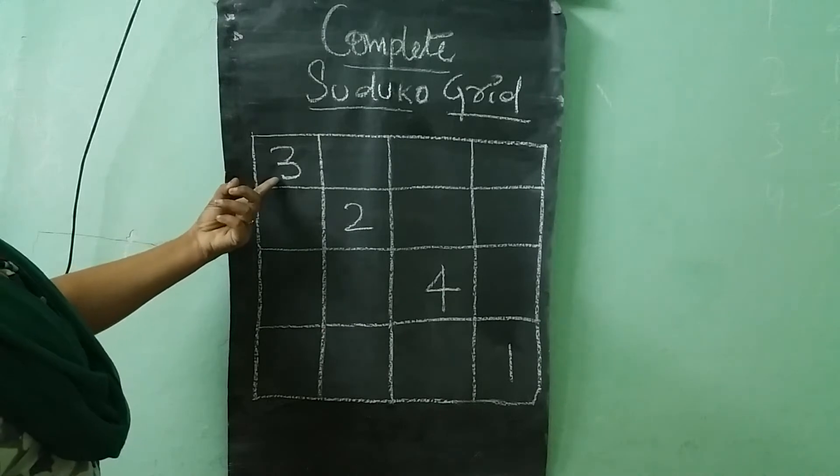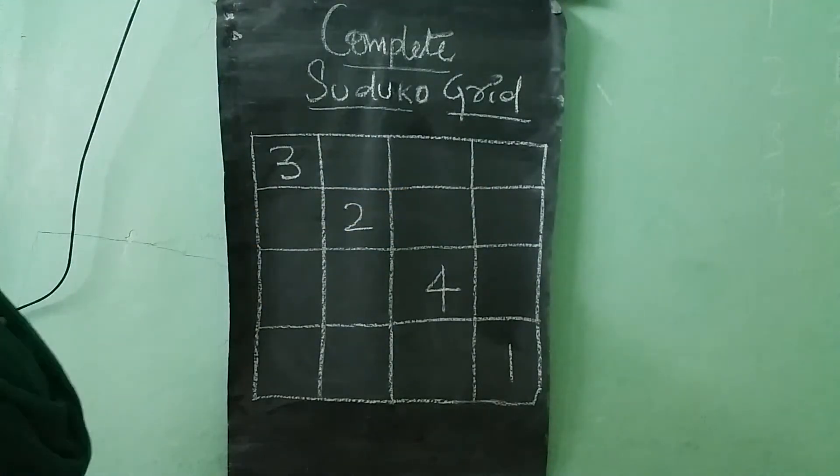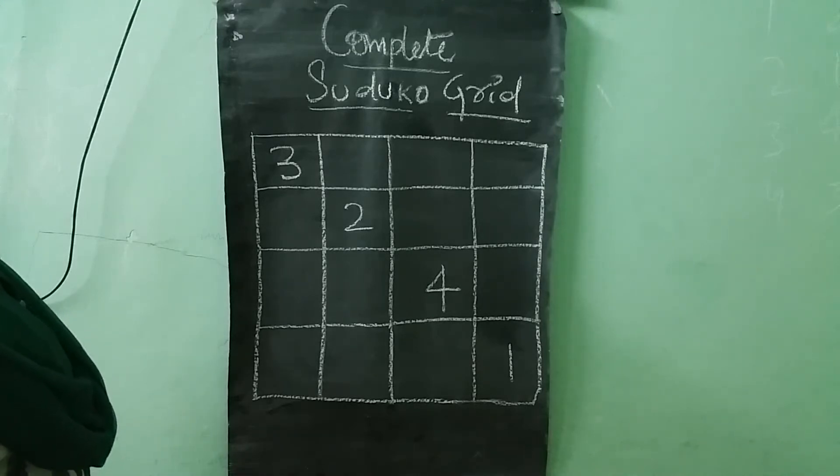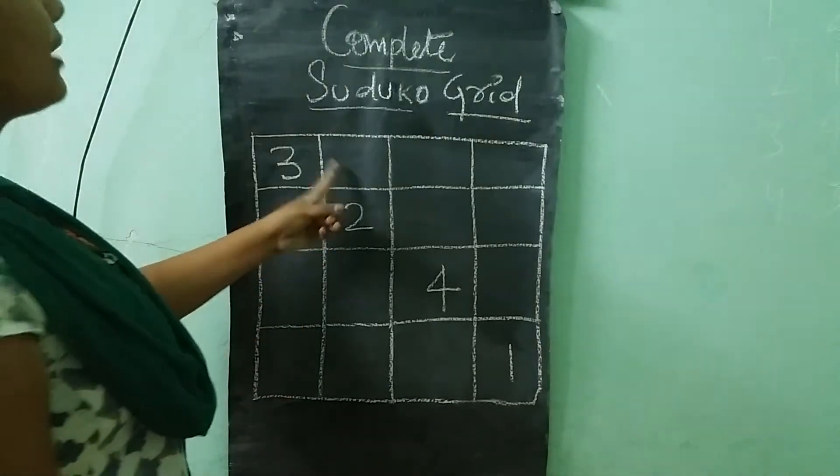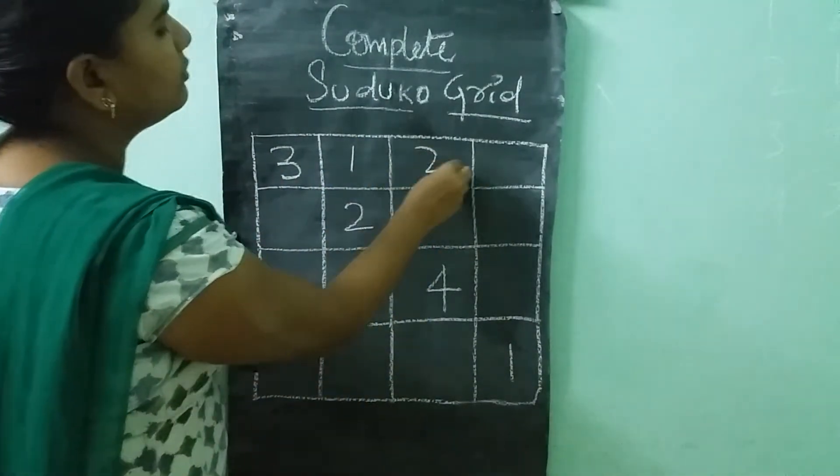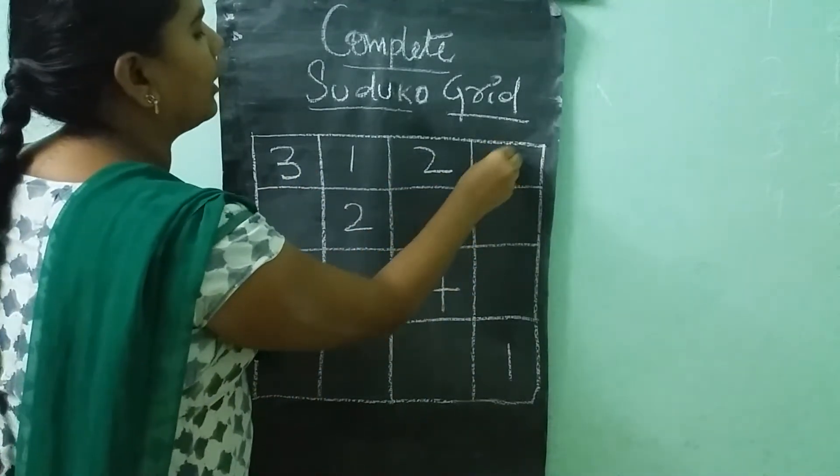Here we have three numbers. So remaining numbers we need to write in these boxes. What are those numbers? 1, 2 and 4. So where we write one number children? Here I am writing 1. Next here 2. Already 3 is there. So I am writing 4 here.